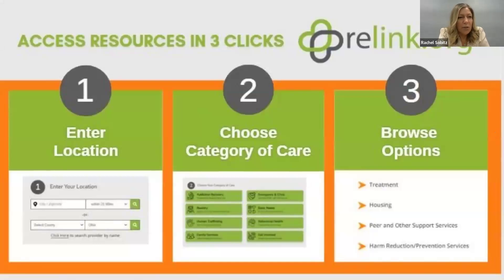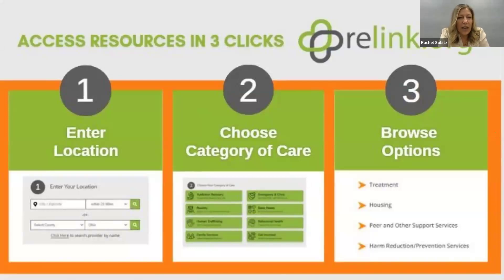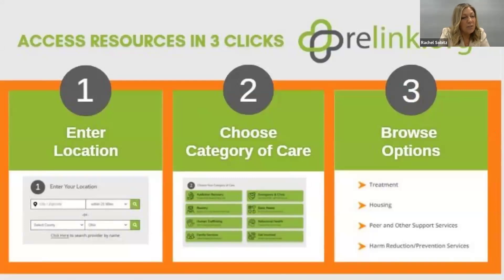When you are searching for something and you go to ReLynx.org, you simply put in a city, zip code, or county. Once you hit those, you'll have different categories of care come up. Once you select a category of care, you'll have different options to browse. We always say you can get to a resource in three clicks and 30 seconds.